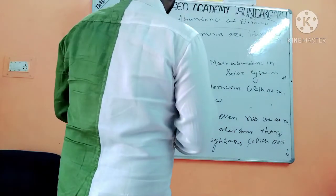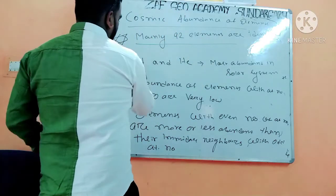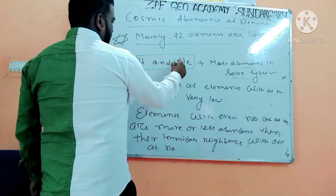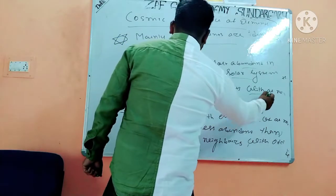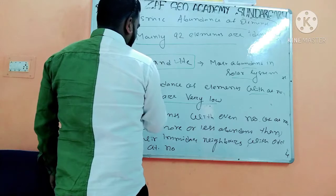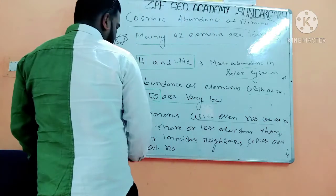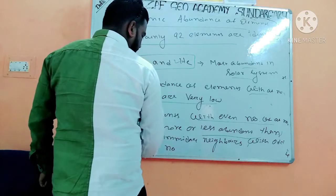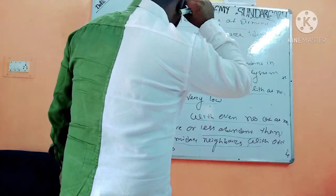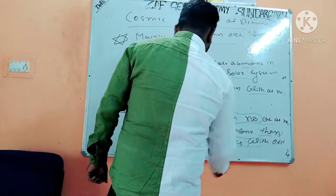Now, the cosmic abundance of elements: mainly 92 elements are identified. Hydrogen and helium are the main basic constituents of our solar system and are the most abundant. The abundance of elements with atomic number greater than 50 is very low. The Oddo-Harkins rule states that elements with an even atomic number are more abundant than their immediate neighbors with odd atomic numbers, and elements with odd atomic numbers are less abundant.